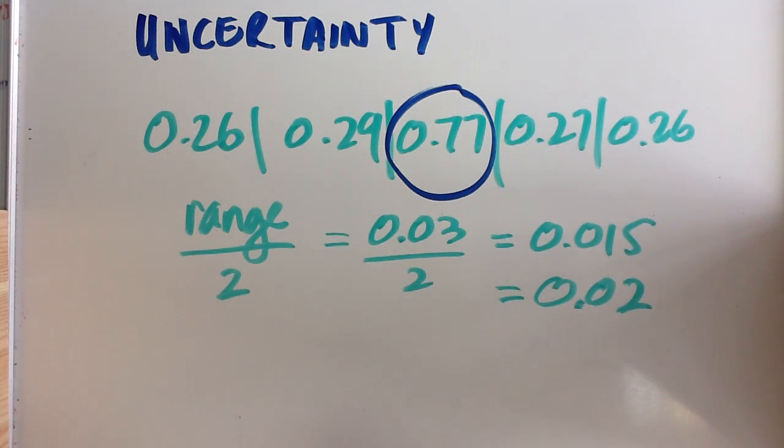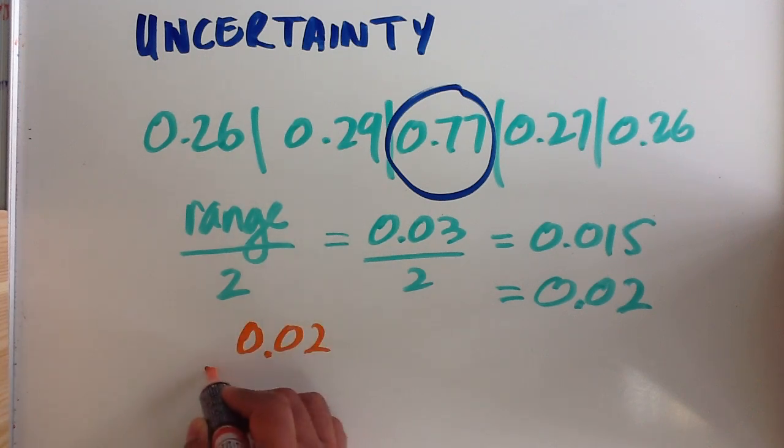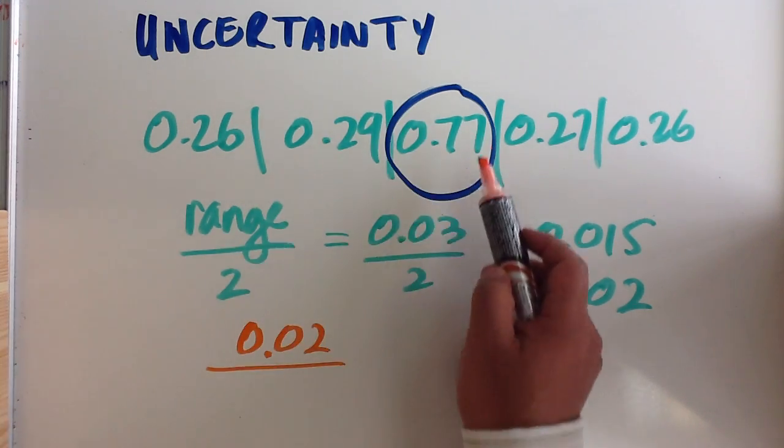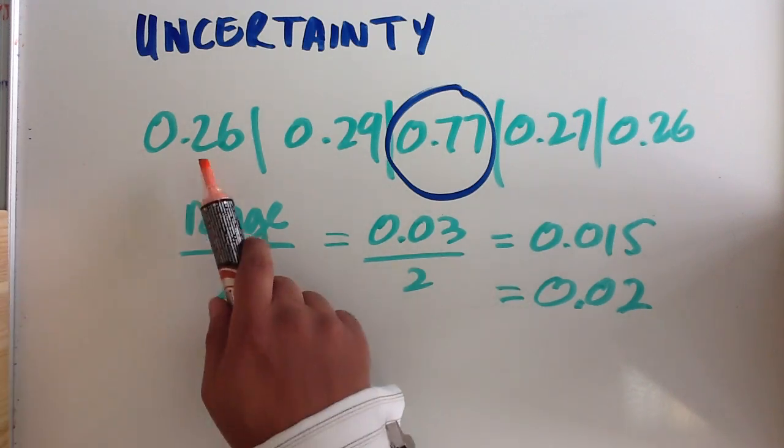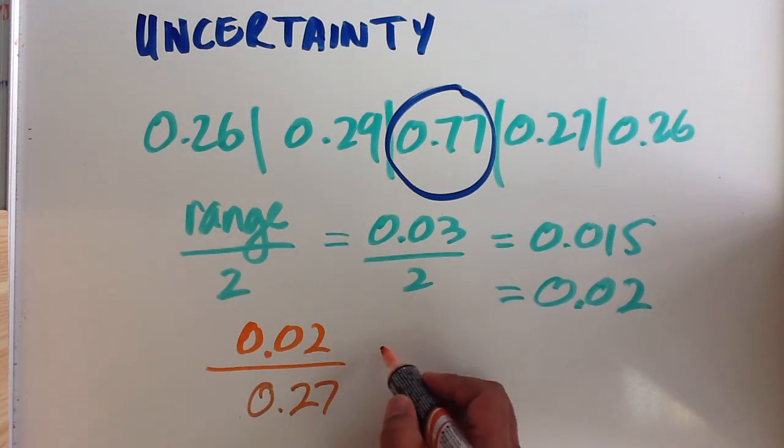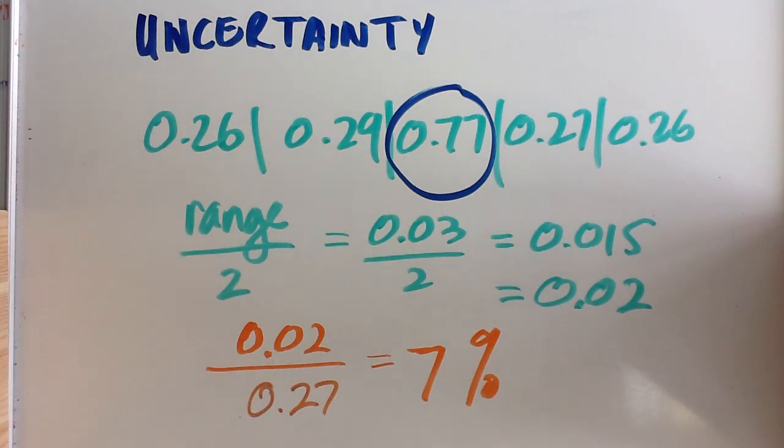If we then want to get the percentage uncertainty from that data, we take the 0.02, and you divide that by your mean value. Now, as I said, we exclude the anomalous data point. So the mean of the four data that remains is 0.27, and we get a percentage uncertainty of 7% in this case.